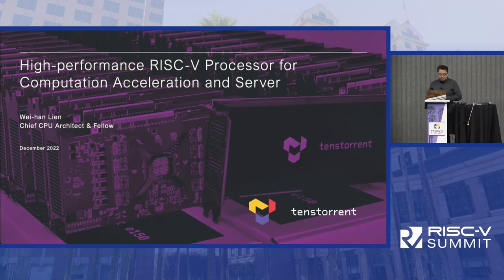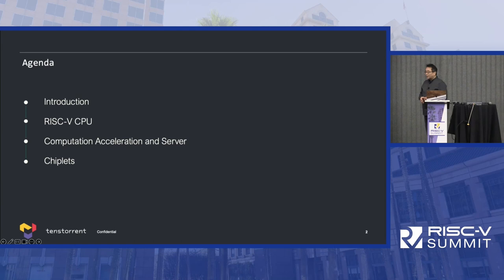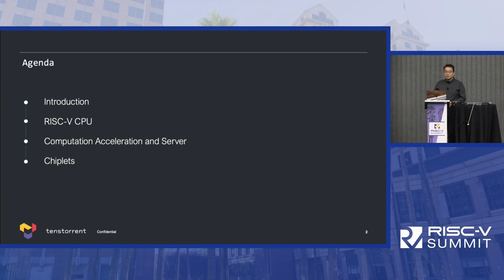For the agenda, I will introduce TenStory. I've been working on this project for about one and a half years, kind of in stealth mode, and now we finally see the daylights. I want to introduce what our RISC-V CPU design is, with a focus on why we're building RISC-V and how it's actually being used in computational acceleration and the server. Then I'll talk about the chiplet strategy and composability — how TenStory can easily expand into building a wide variety of different products with chiplets.